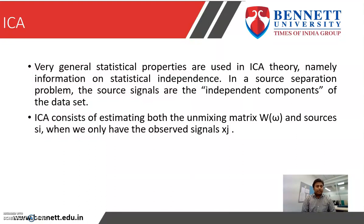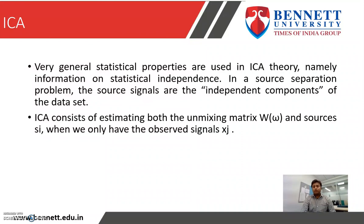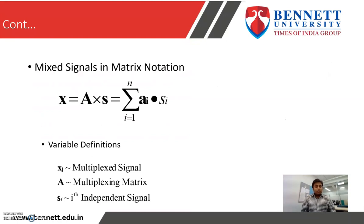ICA means Independent Component Analysis. Very general statistical properties are used in ICA. As the name suggests, in a source separation problem, the source signals are the independent components of the dataset. ICA consists of estimating both the unmixing matrix and the sources when we only have the observed signals Xj. The representation of mixed signals: x is equal to A cross S, where Xj is the mixed signal, A is the mixing matrix, and Si is the i-th independent signal.